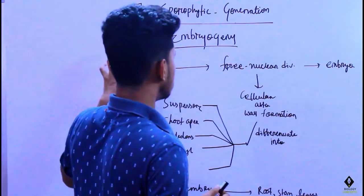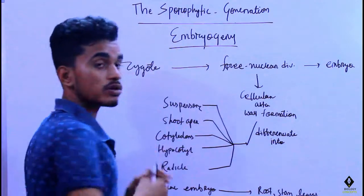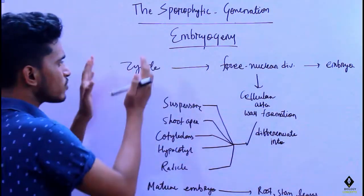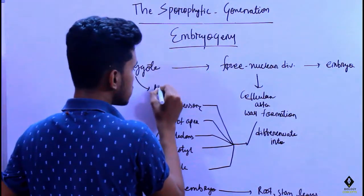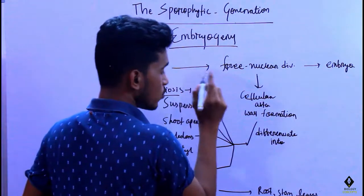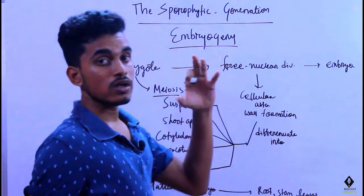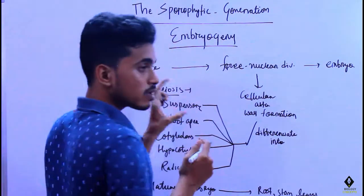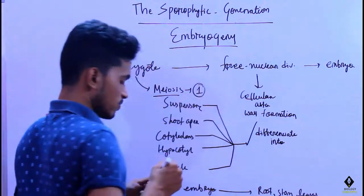The zygote will develop into the embryo, and this process of developing the embryo from the zygote is called embryogeny. After zygote formation, meiosis occurs, resulting in the formation of four haploid cells. As discussed earlier, development is monosporic — three will degenerate and one haploid cell will be functional.